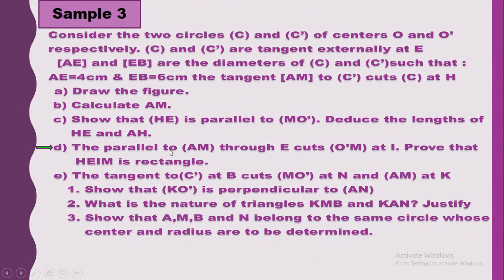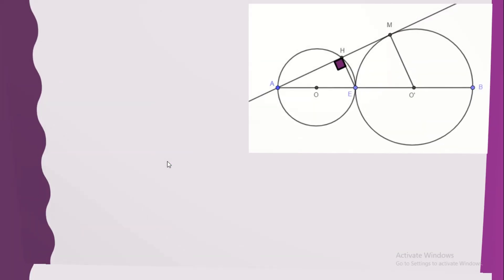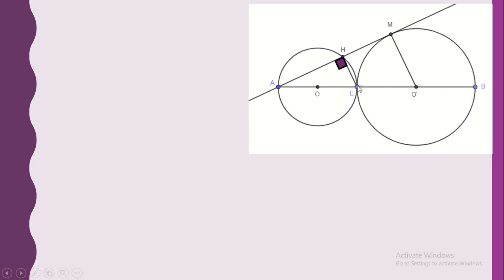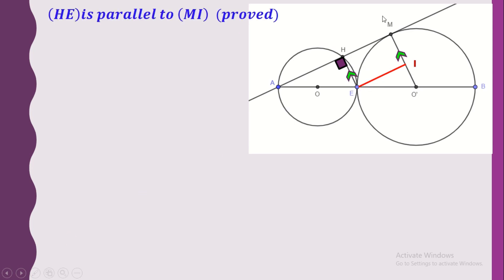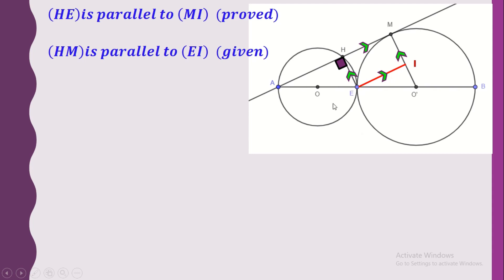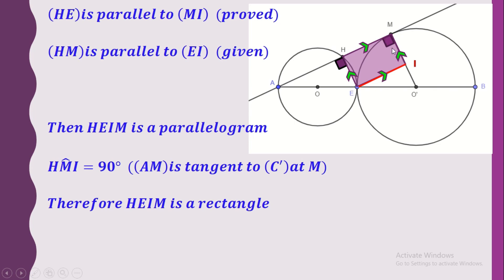Now in part D, the parallel to AM through E cuts O prime M at I. We need to prove that HEIM is a rectangle. We have HE parallel to O prime M, in particular parallel to MI, since they are both perpendicular to the same line. We also have HM parallel to EI as given. So we have a parallelogram, since each pair of opposite sides is parallel. This parallelogram contains a right angle at M, so it is a rectangle. Therefore HEIM is a rectangle.